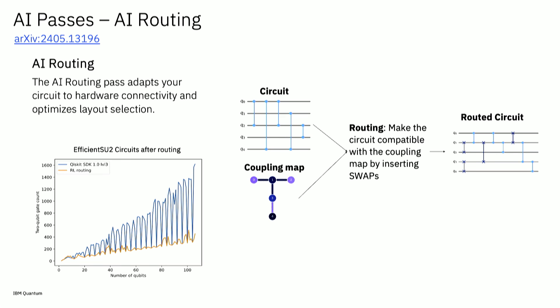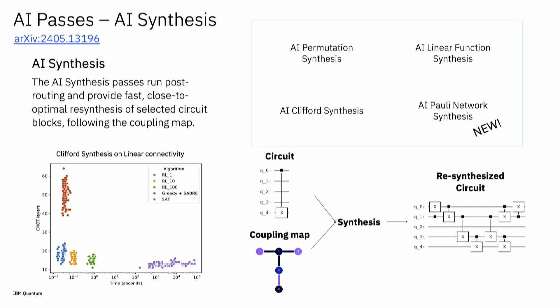This is one of the kinds of passes we were able to do with AI. We also do synthesis passes that we use in the optimization stage. Here we were able to apply this method to four different kinds of circuits. Last year we presented synthesis of permutation, linear functions, and Clifford. Permutation circuits are just circuits made of swaps. Linear functions are circuits only made of CNOTs. Cliffords are Clifford circuits with Clifford gates.